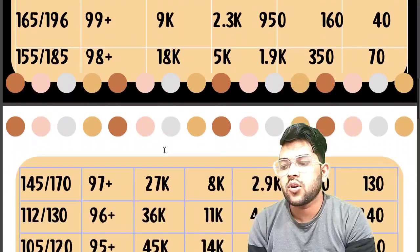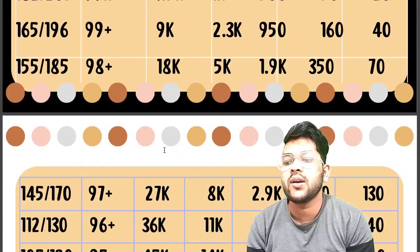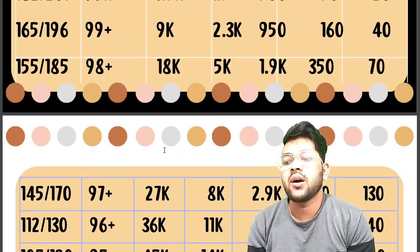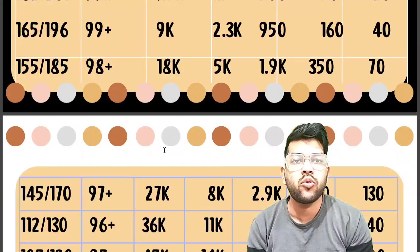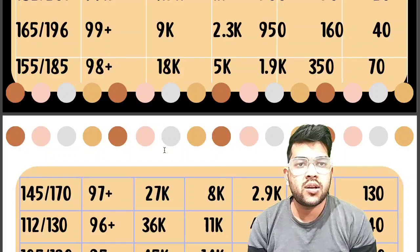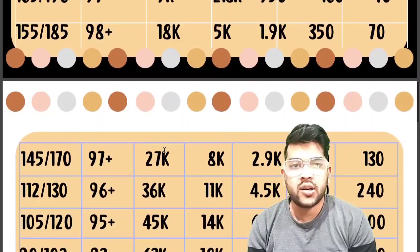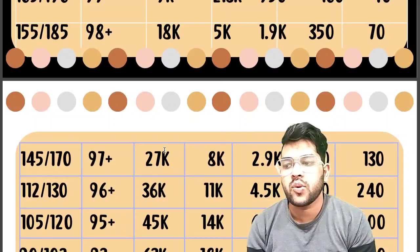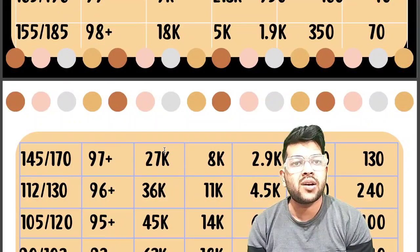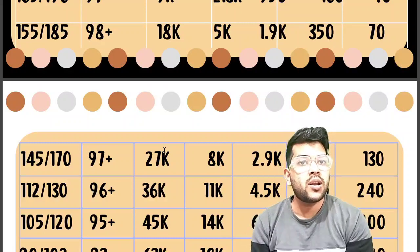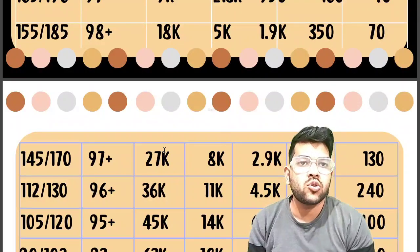For 96+ percentile, 112 marks for the first attempt and 130 for the second attempt will be required. The corresponding ranks are: General 36,000, OBC 11,000, EWS 4,500, SC 800, ST 240. For 95+ percentile, marks required are 105 and 120 for first and second attempt respectively.